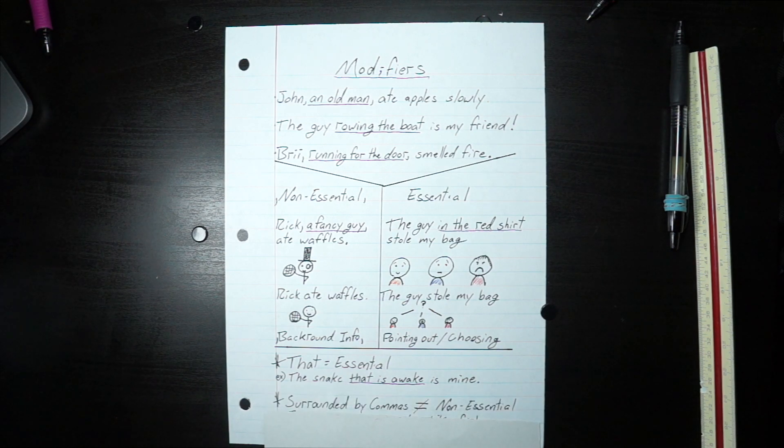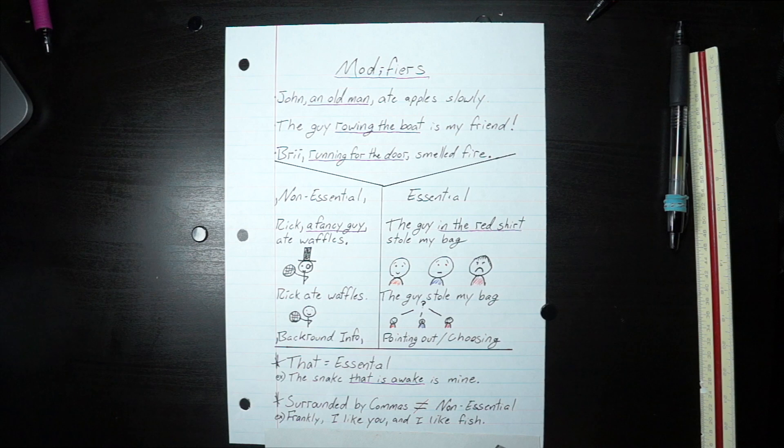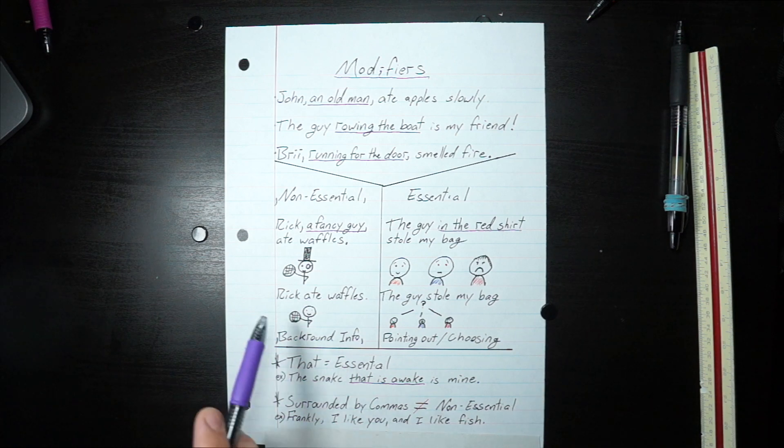The other thing is just because it's surrounded by commas doesn't mean it's a non-essential modifier. For example, frankly, I like you and I like fish. Well, if it's non-essential, you can take out the thing surrounded by commas and it's still good to go, just like Rick ate waffles.